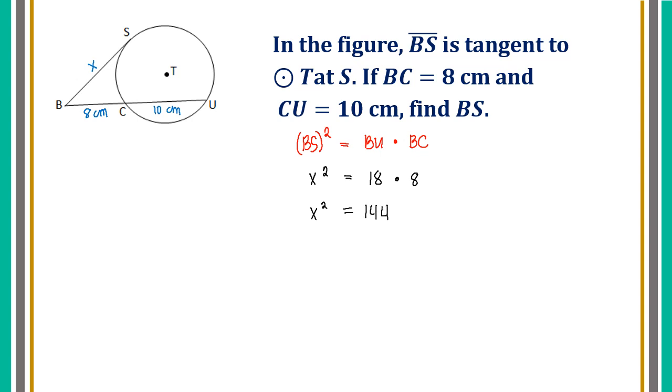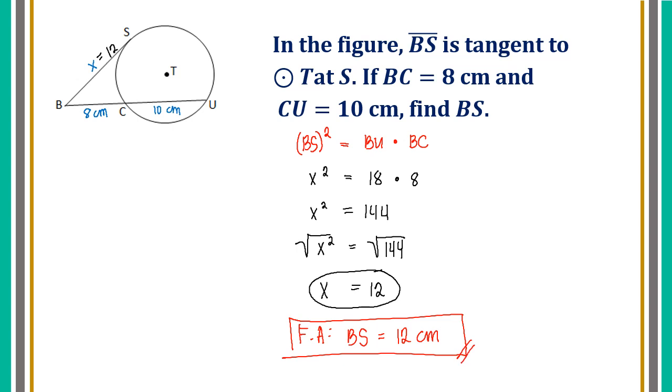This is not yet our final answer since we have X squared. So, we need to simplify by getting the square root of both sides of our equation. What is square root of X squared? It's X. And square root of 144? It's 12. Therefore, BS is 12. But to write your final answer, you should write it completely. Final answer, BS equals 12 centimeters. We need to include the unit of measurement since in the given details, we have 10 centimeters and 8 centimeters.